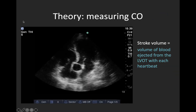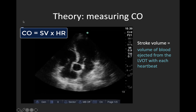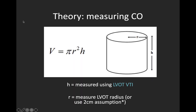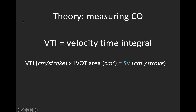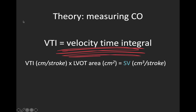Let's talk about how we actually estimate cardiac output using Doppler ultrasound. We want to calculate stroke volume, which we multiply by heart rate to get cardiac output. Your stroke volume is essentially the volume of blood in the cylinder that is the left ventricular outflow tract with every heartbeat — so we're calculating the volume of a cylinder. The volume of a cylinder is π times the radius squared times height. The radius is directly measured via 2D echocardiography, and the height corresponds to the velocity time integral — a distance in centimeters obtained by integrating the Doppler-measured velocity in the LVOT with respect to time. The VTI represents the height of the cylinder, which multiplied by the LVOT area gives stroke volume.